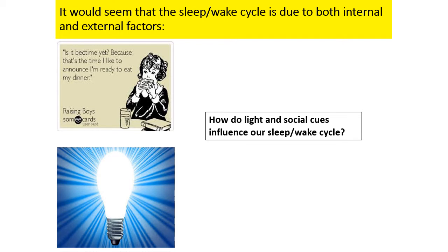Then we have social cues - things like bedtimes and mealtimes. If you think about a newborn baby, they're usually not on our sleep-wake cycle because they fall asleep every three hours and wake up during the middle of the night - they don't have the same sleep-wake cycle as adults. But as we get older, we're sort of entrained to follow the lead of our parents. Our parents tell us when it's time to go to bed, when it's time to sleep, when it's time to eat. Social norms have helped to entrain our circadian rhythms in the way that they are now.